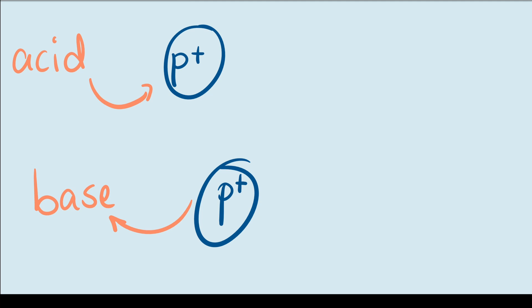A Bronsted-Lowry acid is a substance that donates a proton to another substance, while the base is a substance that accepts a proton from another substance. So in that respect, you can see how these two are very similar in that they kind of feed off of one another. The acid gives off protons and bases accept protons. Let me show you with examples of both.